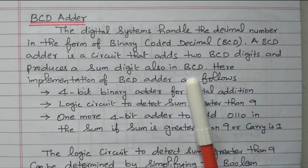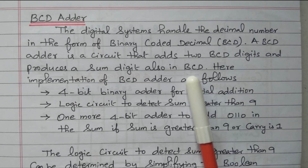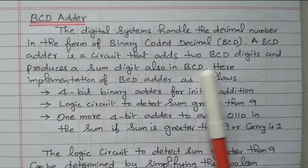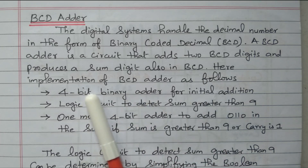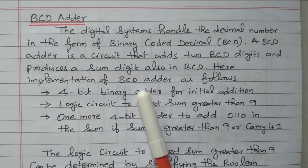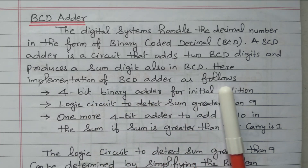So, BCD adder means it will add two BCD numbers, that is four decimal points. The decimal number is converted into four digits. So, two four-digit numbers are added by the BCD adder and the output is also in four digits, BCD. Here, implementation of the BCD adder is as follows.